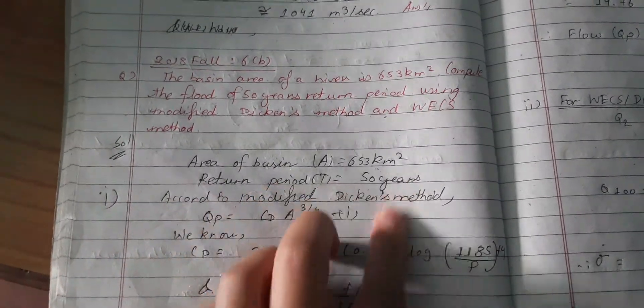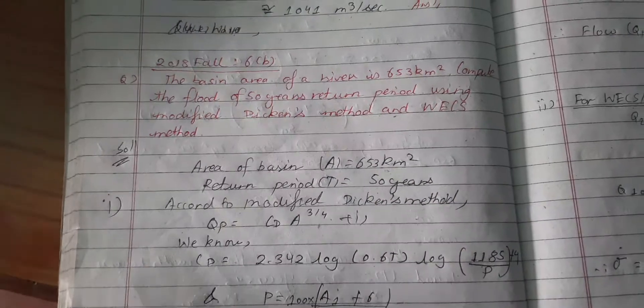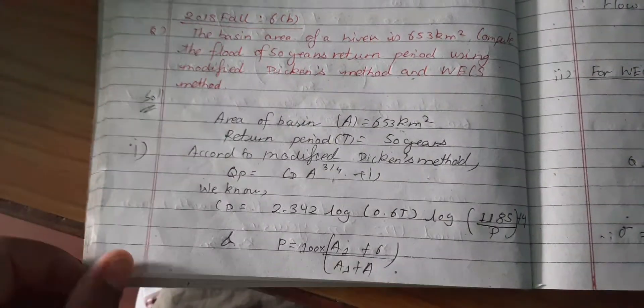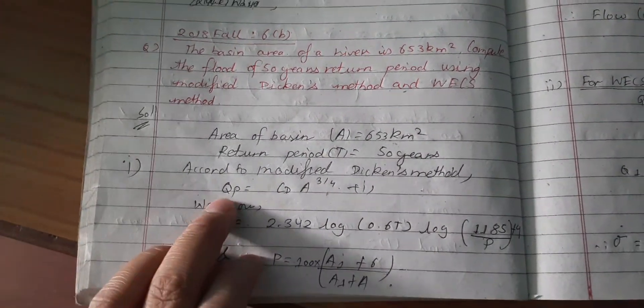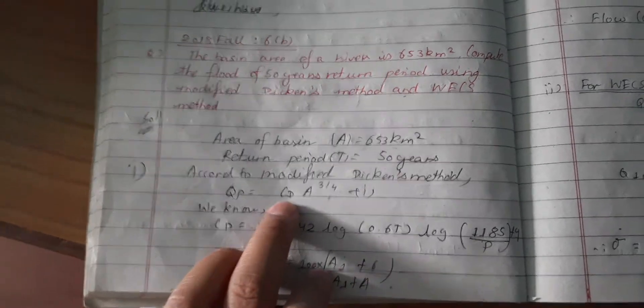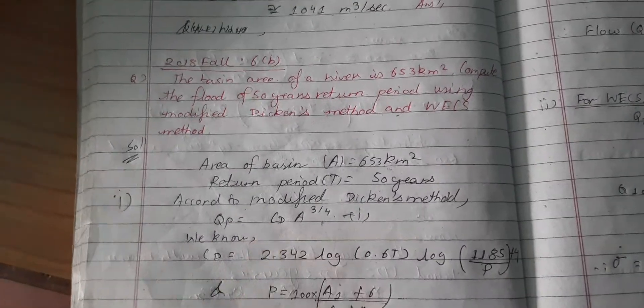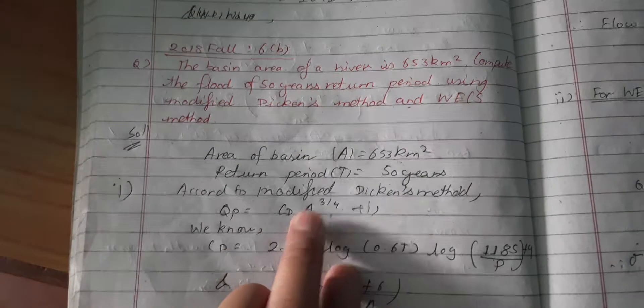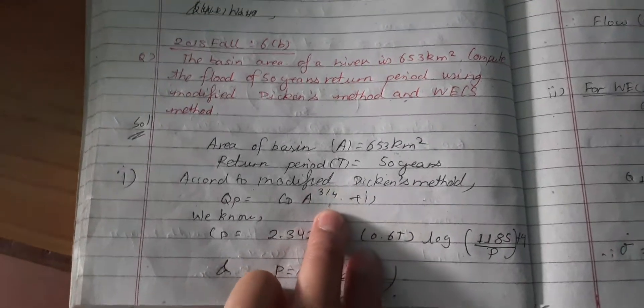To take the Dickens method, I am going to take the discharge Q = Dickens coefficient (CD) times area to the power 3/4 or 0.75. And I am going to take the coefficient of Dickens constant.